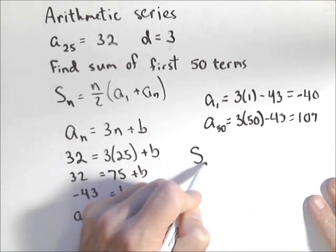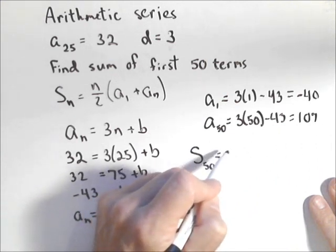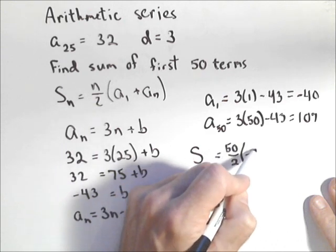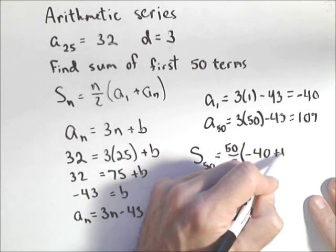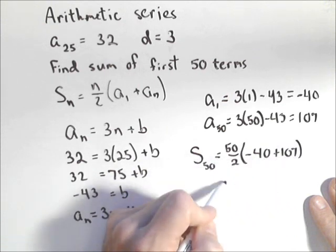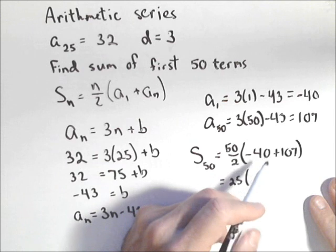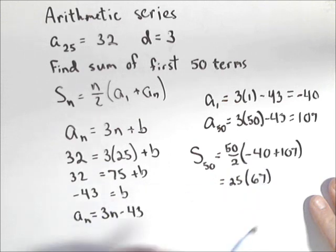So our sum of the first 50 terms is 50 over two times negative 40 plus 107, or we have 25 times 67.